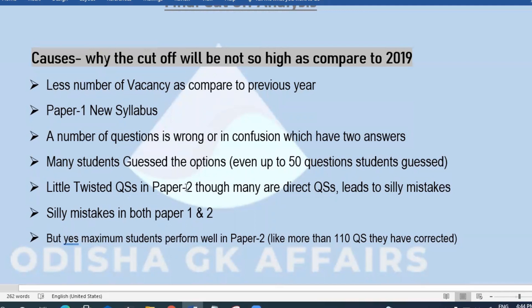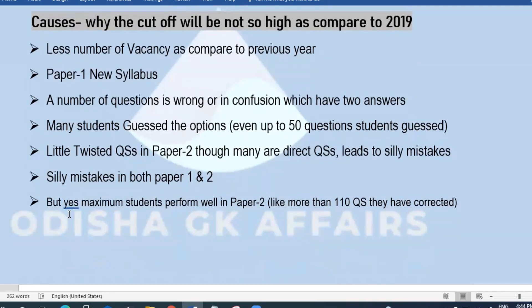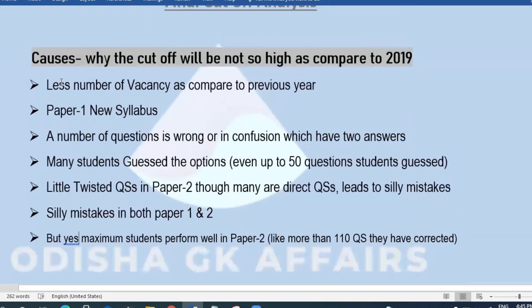Silly mistakes occurred not only in paper two but also in paper one. However, the final point is that maximum students performed well in paper two. Most students corrected more than 110 questions in paper two — they attended 120 to 130 questions but definitely corrected 110.